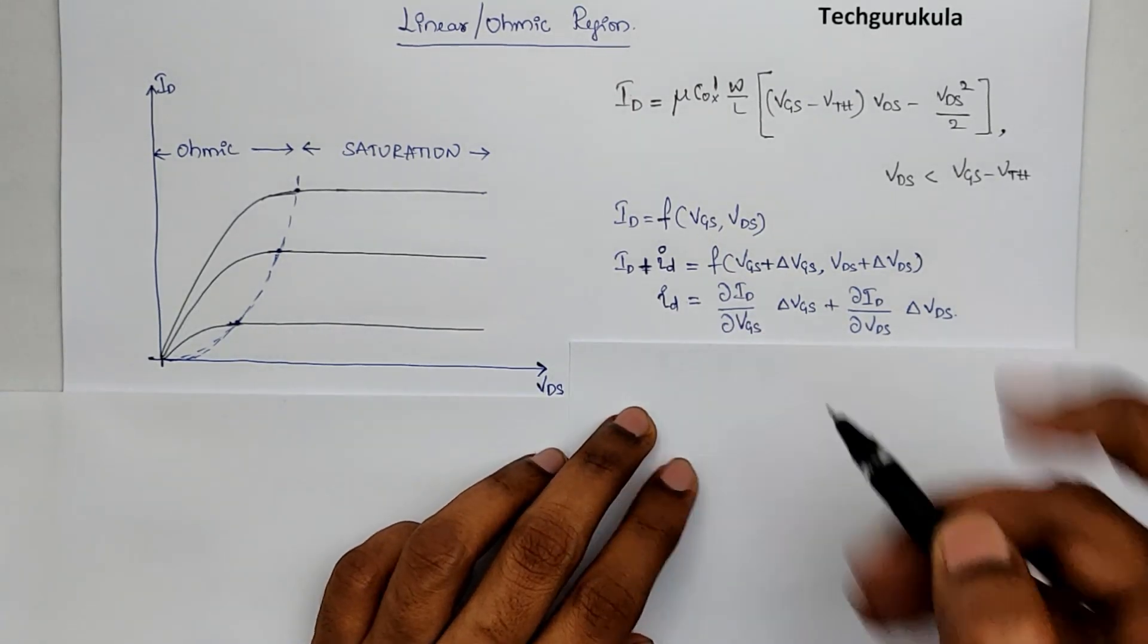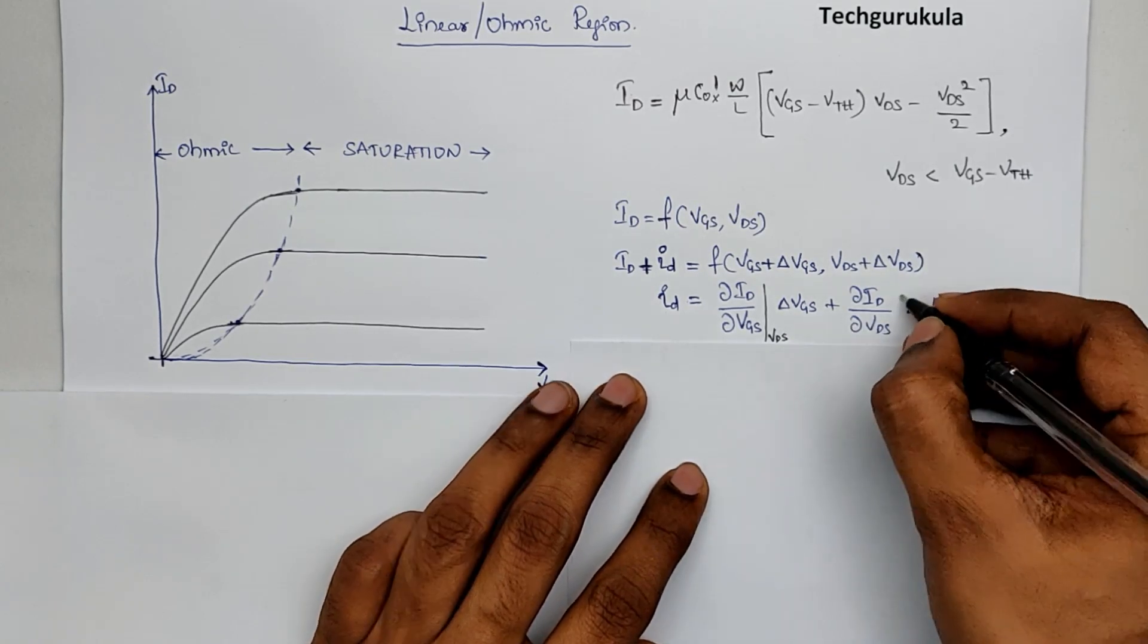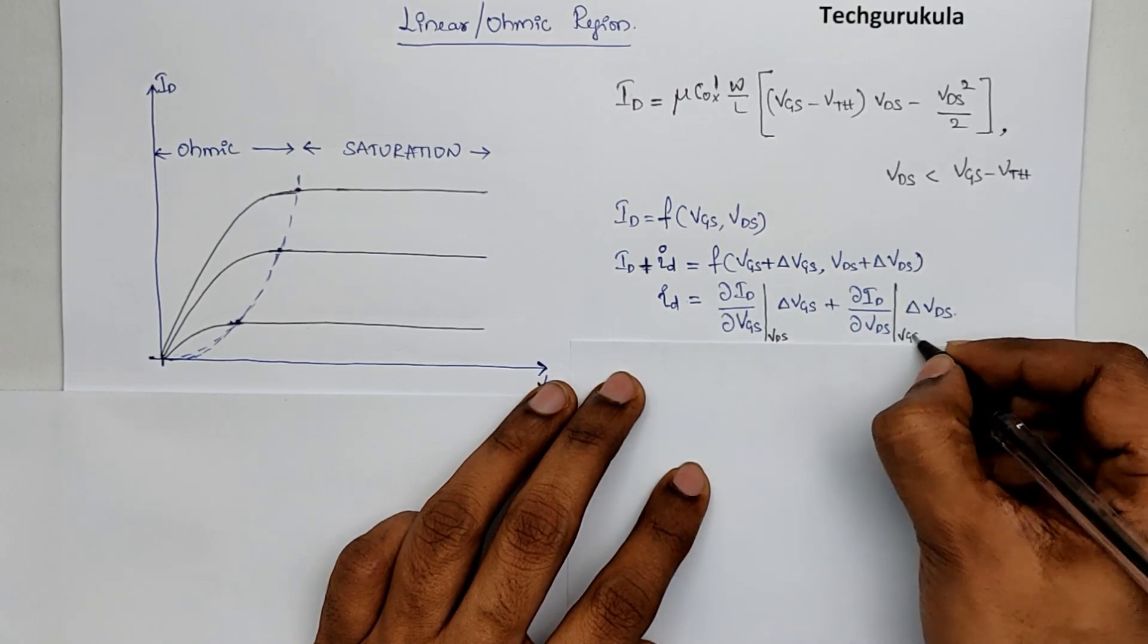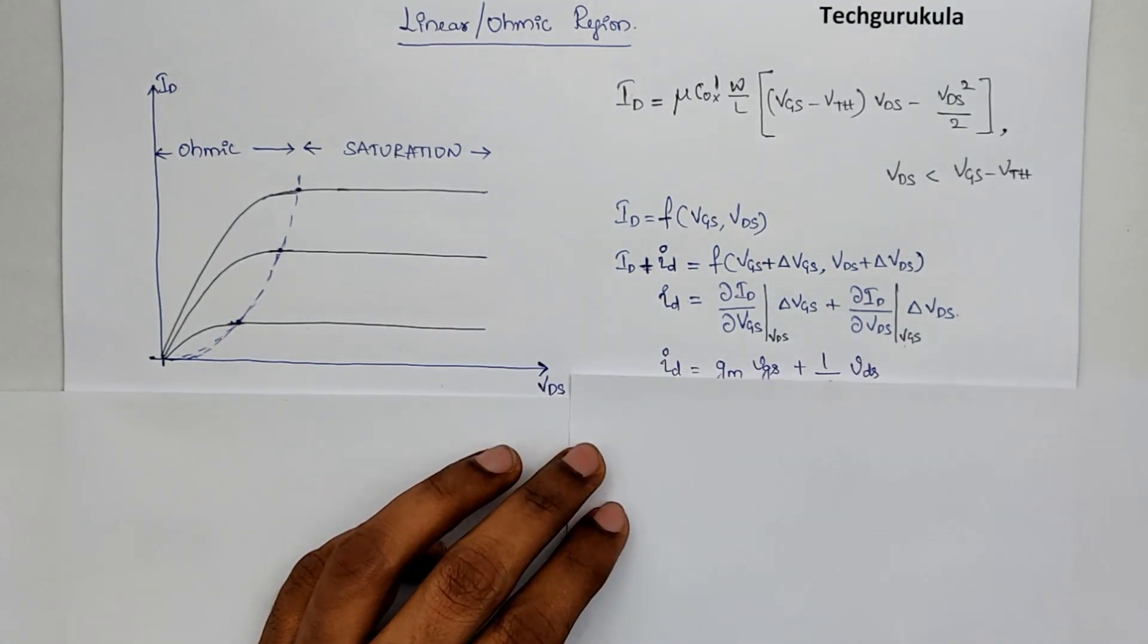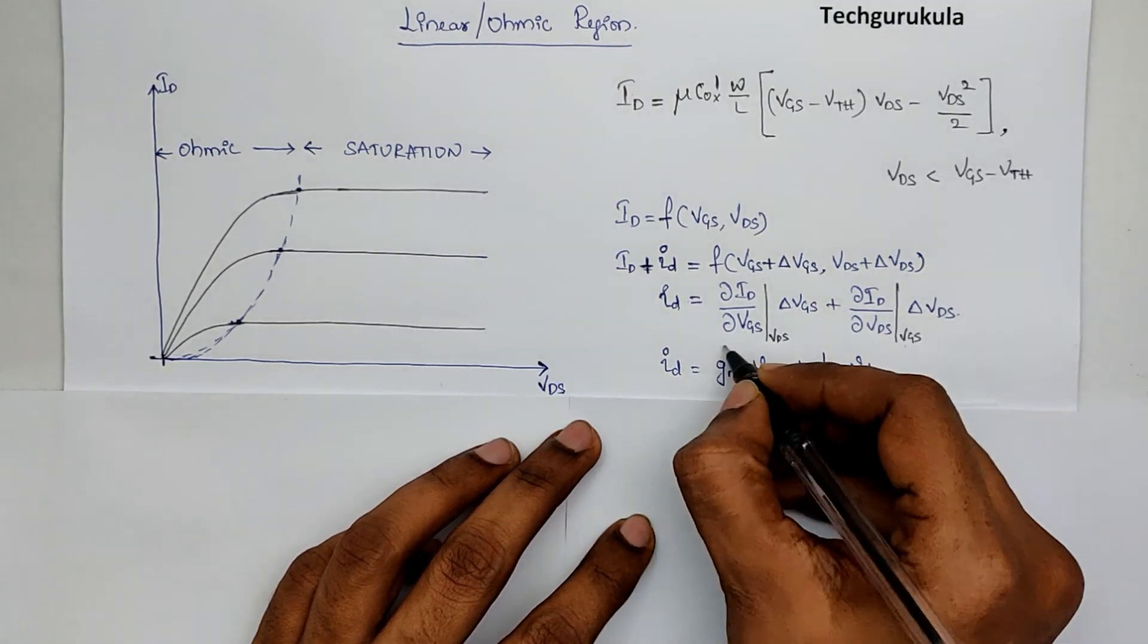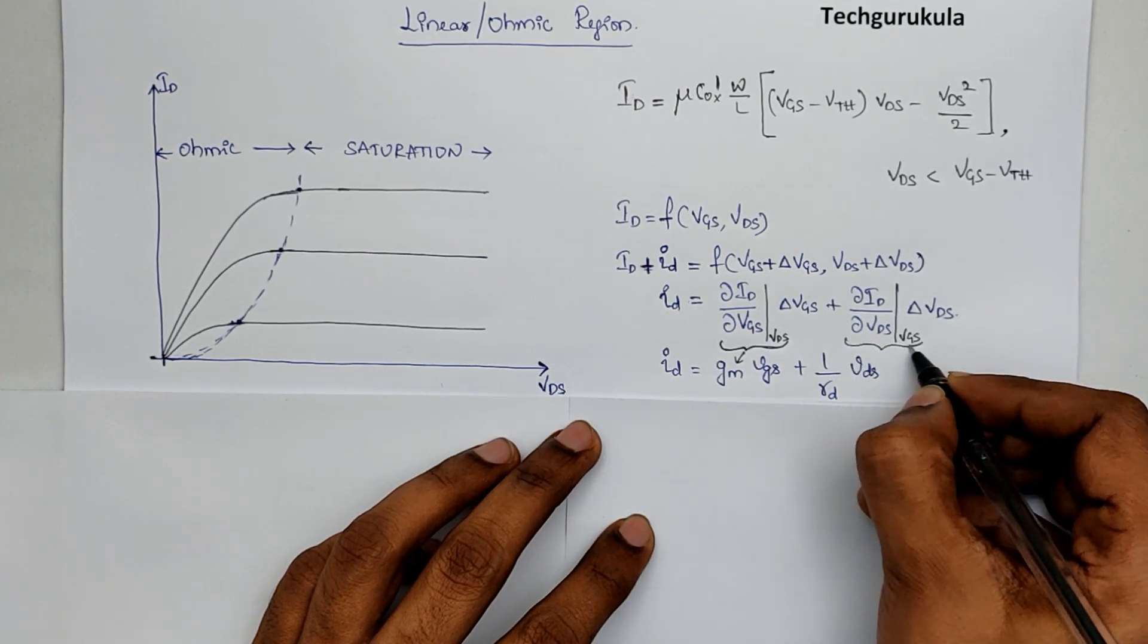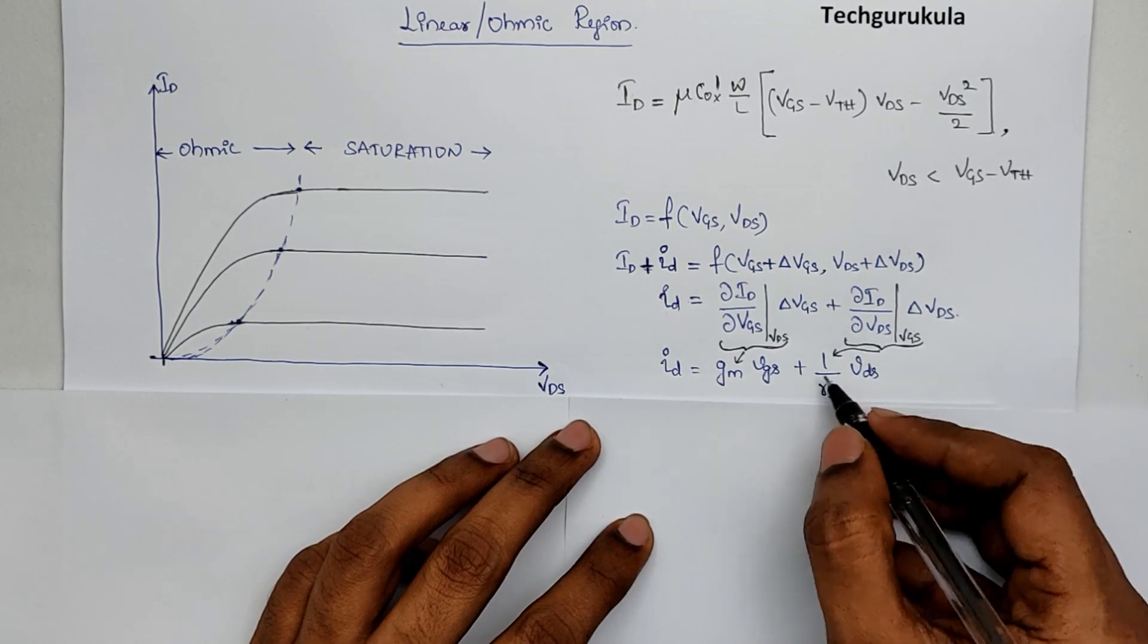In fact, at a given VDS times delta VGS plus this is partial differentiation of ID with respect to VDS at a given constant VGS times delta VDS. This can be equated to GM times VGS plus 1 over RD times VDS. This quantity, we're calling it GM, and this quantity, we're calling this 1 over RD, or we can say this is GD.